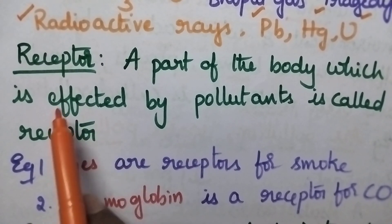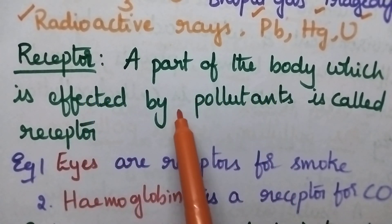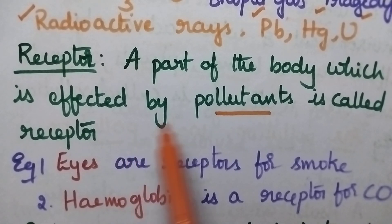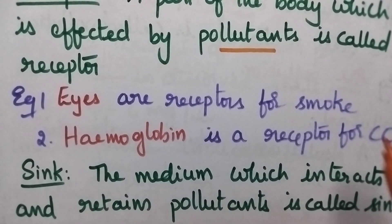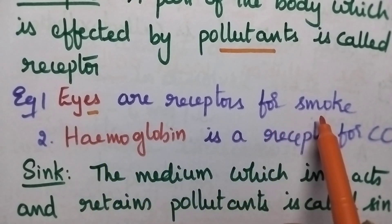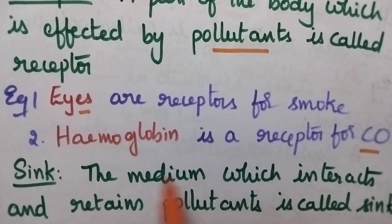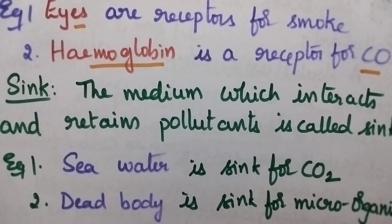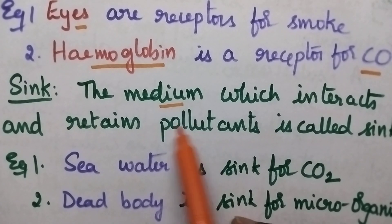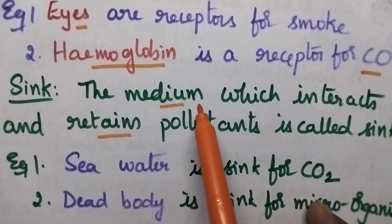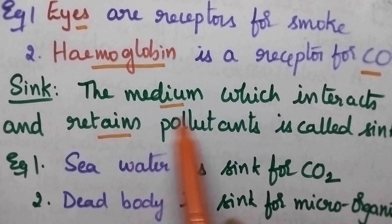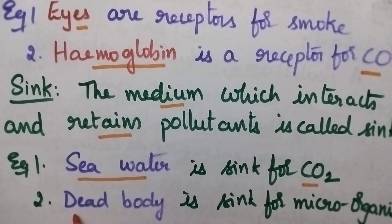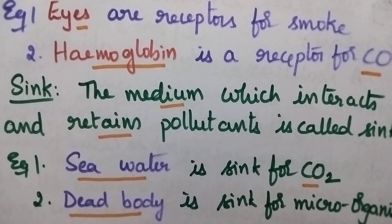The next term is receptor — it is the part of the body which is affected by the pollutants. For example, eyes are receptors for smoke. Similarly, hemoglobin is a receptor for carbon monoxide. The next term is sink — the medium which interacts and retains the pollutant. The best example is seawater, which is the sink for carbon dioxide, and a dead body is a sink for microorganisms.